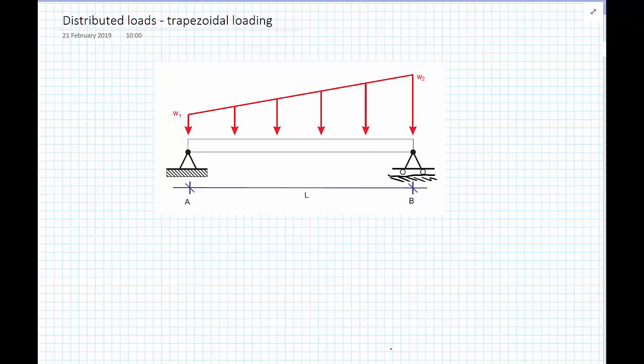In the previous example, we looked at how we convert a uniformly distributed load into one point load and then use our equations of equilibrium to work out what the reactions were on a simply supported beam. In this example, we're going to increase the complexity slightly. We now have a simply supported beam with a length of 6 metres, but instead of a uniformly distributed load, we now have a load that is linearly distributed.